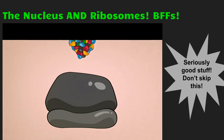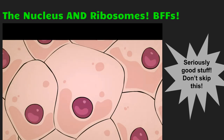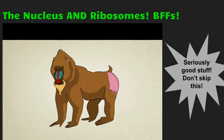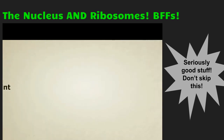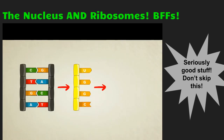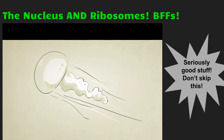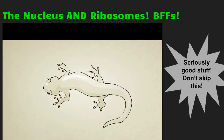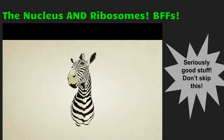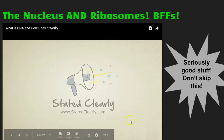Once the protein is built, it can go on to do a number of different things, one of which could be to help form a brand new cell. So to answer the original question: DNA is a molecular blueprint for a living thing. DNA creates RNA, RNA creates protein, proteins go on to form life. This entire process, as complicated and sophisticated as it might seem, is entirely based in chemistry — it can be studied, it can be understood. I'm John Perry, and that's DNA Stated Clearly.